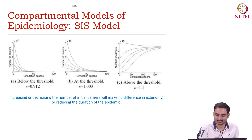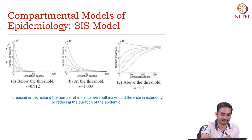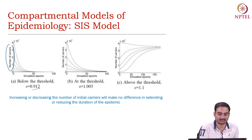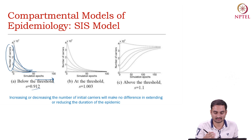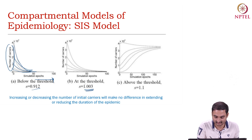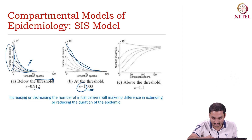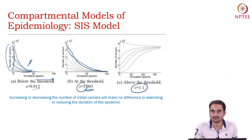Similarly, looking at other observations: when you have a certain number of carriers and initiators, with a strength of 0.9, eventually the number of carriers will die out as you increase the number of iterations. When you increase the threshold a bit — when the strength is 1 — it takes longer to die out than the previous case.